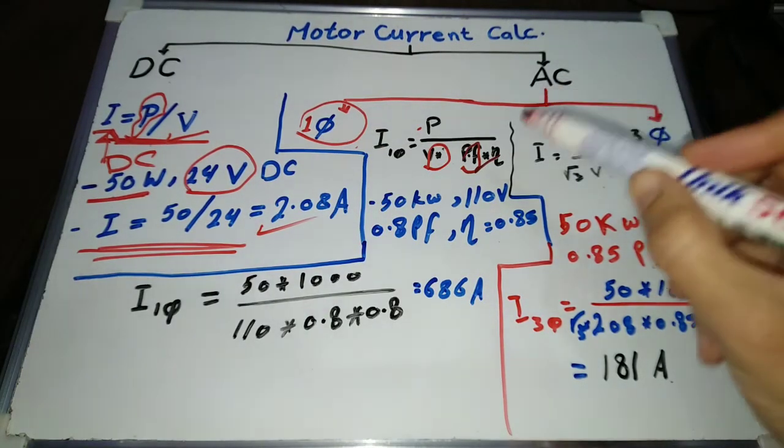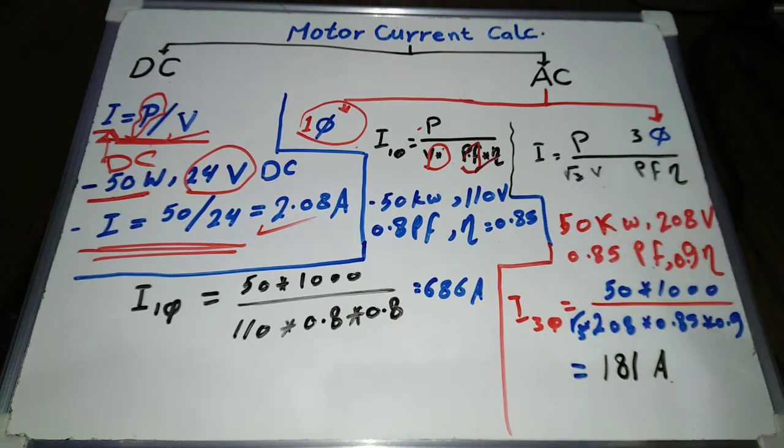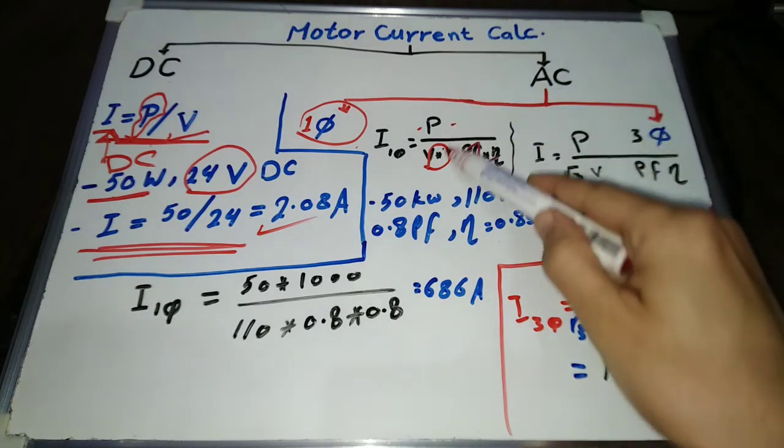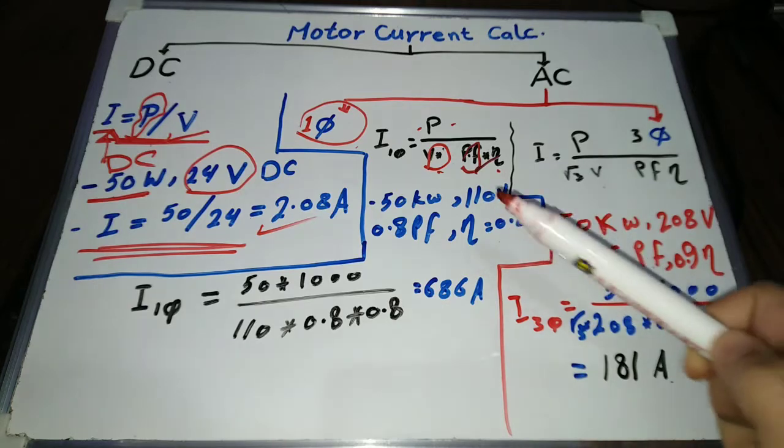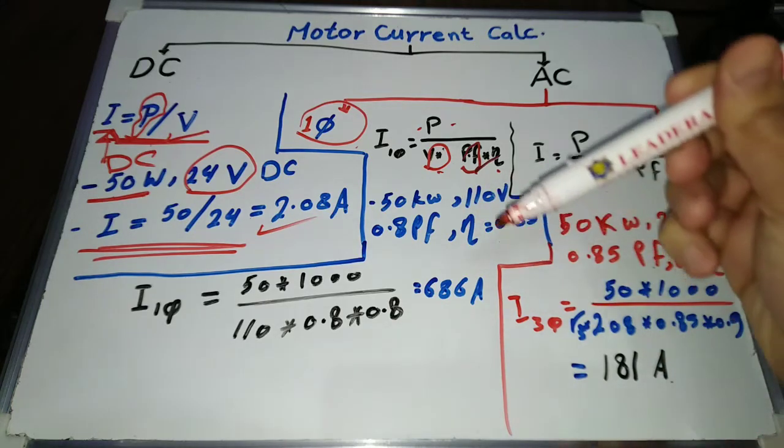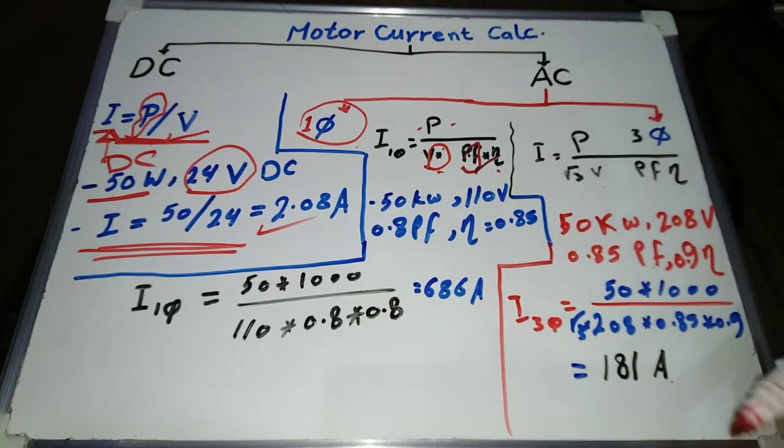All the formula data are on the motor nameplate: the motor power, voltage, power factor, and efficiency. I have made a detailed video about motor nameplate data. You can find it in the description below.